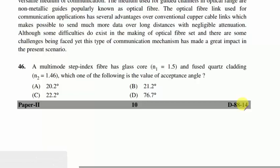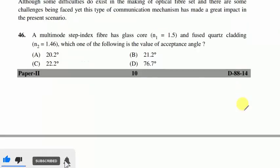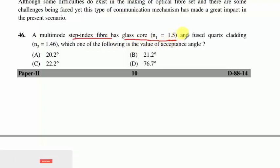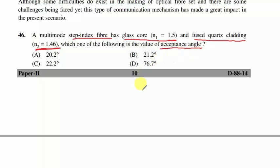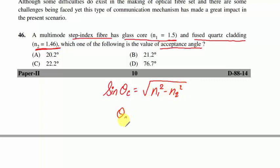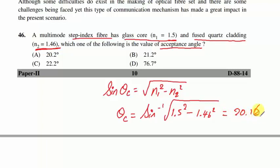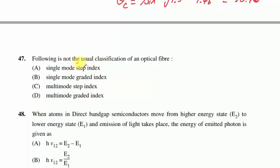Question 46 is based on optical fiber communication. A multimode step-index fiber has core refractive index n1=1.5 and fused quartz cladding with n2=1.46. To find the acceptance angle: θ_c = sin⁻¹(√(n1²−n2²)) = sin⁻¹(√(1.5²−1.46²)) = sin⁻¹(√(2.25−2.1316)) = 20.16°. Option A is correct.